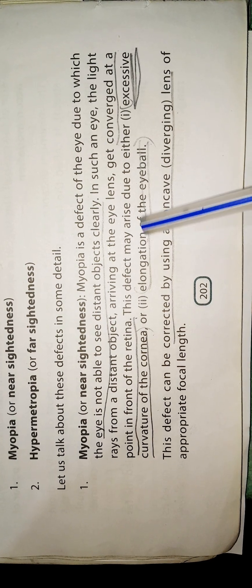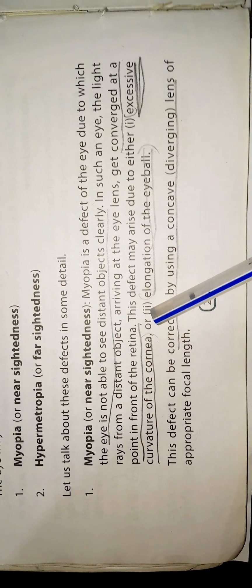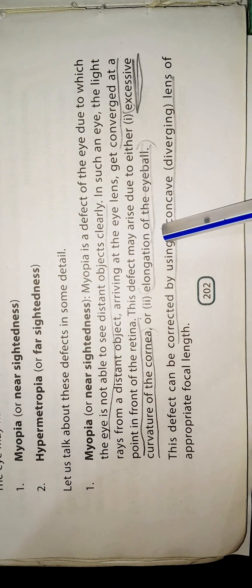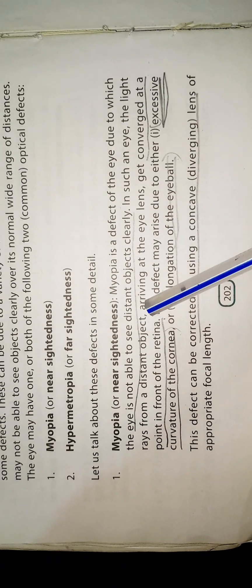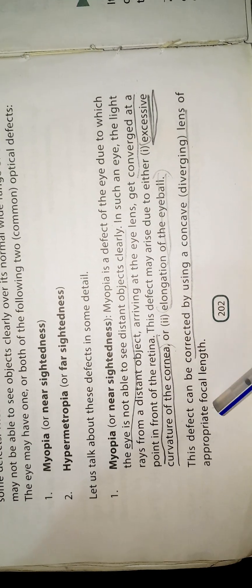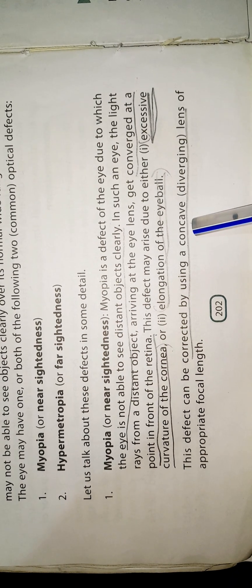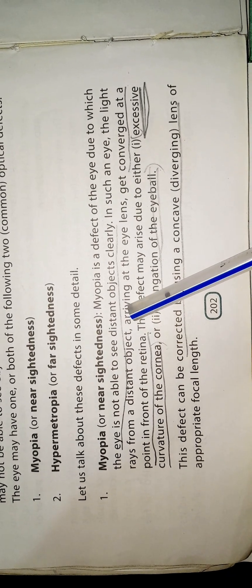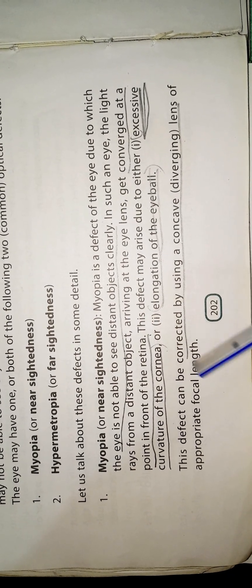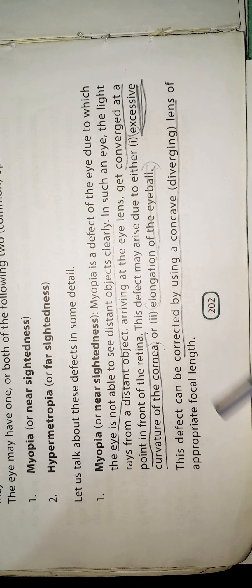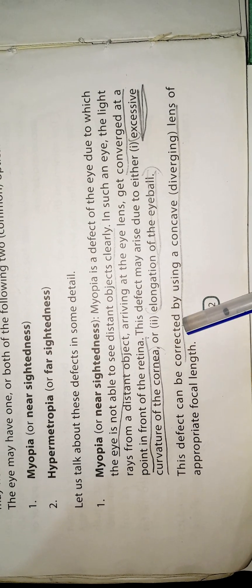This defect may arise due to either excessive curvature of the cornea or elongation of the eyeball. This defect can be corrected by using a concave lens of the appropriate focal length.